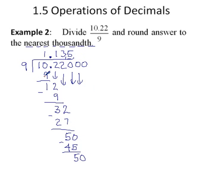Drop down another 0. 9 goes into 50 5 times. 5 times 9 is 45. Subtract. You get 5.